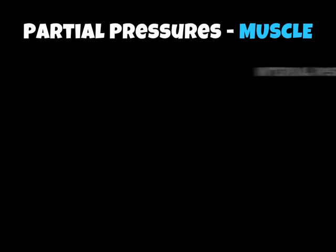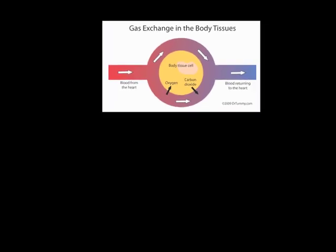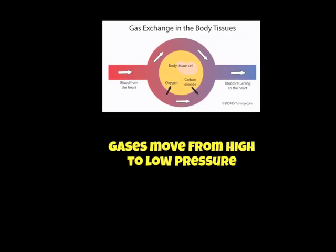If we're looking at what happens in the muscle, which I'll ask you to draw a diagram about, it is called internal respiration. Again, don't get confused with inspiration and expiration. Internal respiration is to do with muscles, diffusion, and gaseous exchange. The yellow bit in the middle of the diagram represents the muscle. The red bit on the side is blood coming in from the heart. The oxygen goes into the muscle group, the carbon dioxide swaps and comes out, creating the blue deoxygenated blood which returns to the heart. Gases move from high to low pressure.